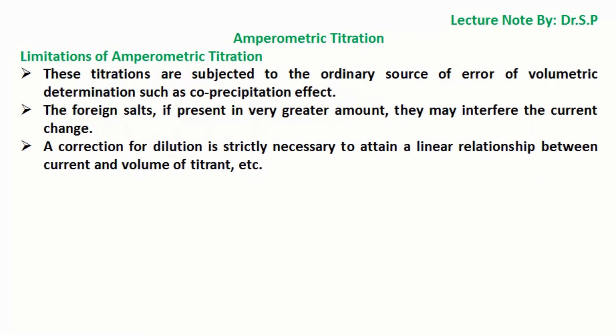Limitations of amperometric titration: These titrations are subjected to the ordinary source of error of volumetric determination such as coprecipitation effect. The foreign salts, if present in very greater amount, they may interfere with the current change. A correction for dilution is strictly necessary to attain a linear relationship between current and volume of titrant, etc.